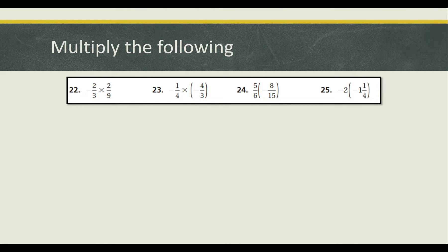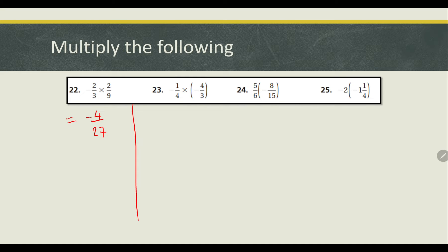Welcome to another video. In this video I'll be teaching you about multiplying rational numbers. Let's get to it. For the first one, let's see if we can simplify anything — and we cannot — so all we do is multiply top with top. We have negative 4 over 27. That's it, finished.